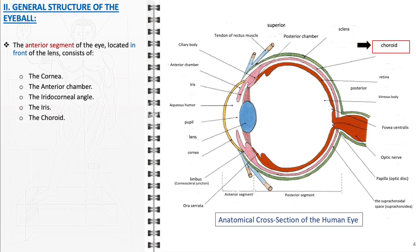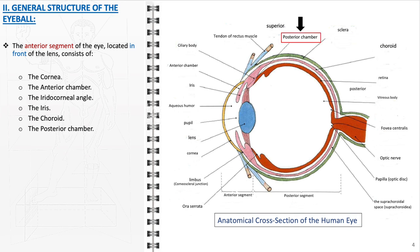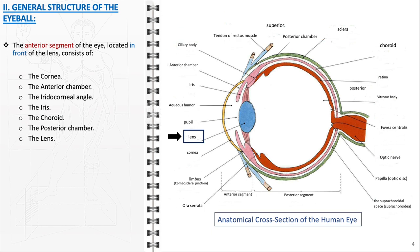The choroid, a vascular layer that supplies blood, especially to the outer portions of the retina. The posterior chamber, situated between the iris and the lens, is yet another space filled with aqueous humor. The lens itself is a transparent, biconvex entity.